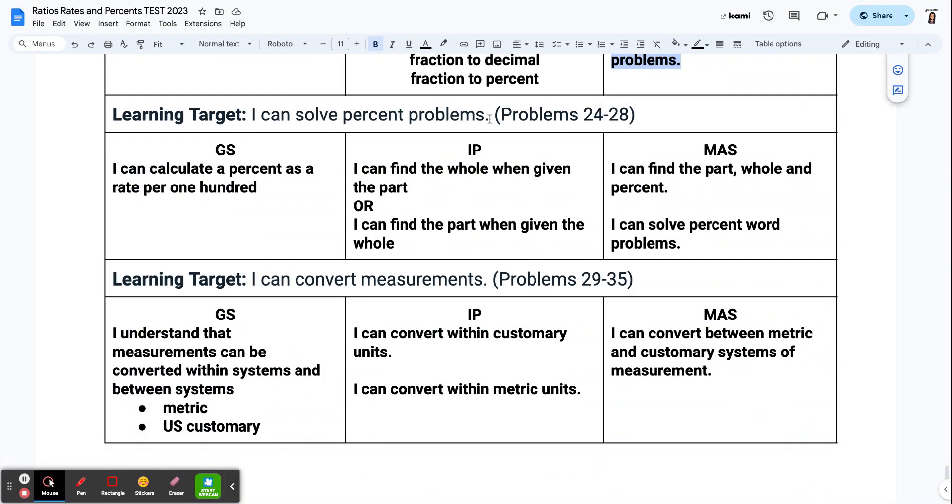The next part is your percent problems, self-explanatory. The section where you are trying to find the part or the total, this is your whole is over of section. Getting started is just, hey, can you calculate a percent as a rate out of 100? Do you know a percent means out of 100? Your in progress, again, just means that you can solve some is over of problems. And your mastery is you can do all of them. And I can even throw you up a word problem that requires you to use is over of. And you can do that.